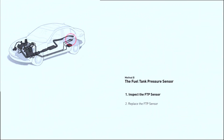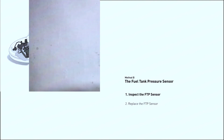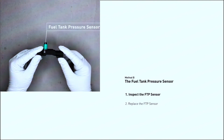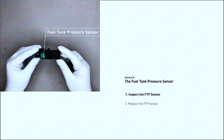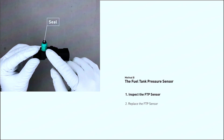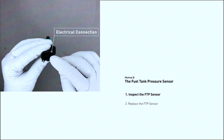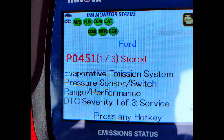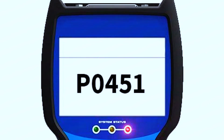Repair or replace damaged hoses: any identified leaks in the EVAP system hoses should be repaired or replaced. Replace the fuel tank pressure sensor: if the sensor is found to be faulty, replacing it will be necessary. This is generally not a DIY job for beginners as it can require specific tools and knowledge. After the repairs, use an OBD2 scanner to clear the P0451 code and reset the check engine light. If the repair was successful, the light should stay off.